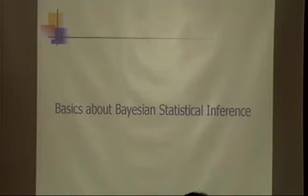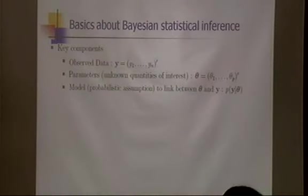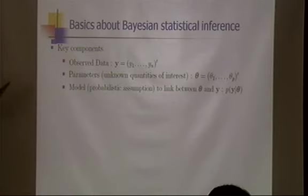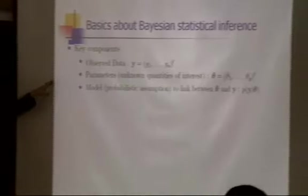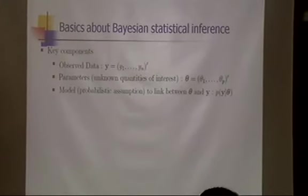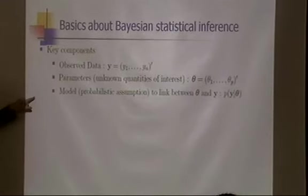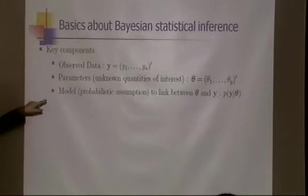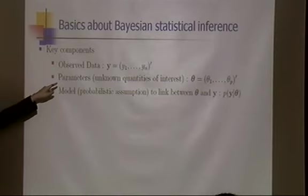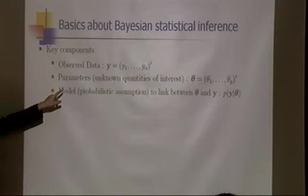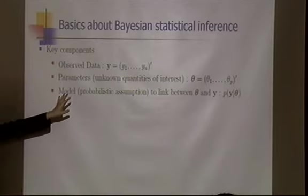When we conduct statistical inference, we need three components: data, parameters, and a model. The parameter is unknown quantities that investigators are interested in. I'll use y as a data vector with n observations and theta as a parameter vector with p different parameters. The model is a probabilistic assumption linking parameters and data.